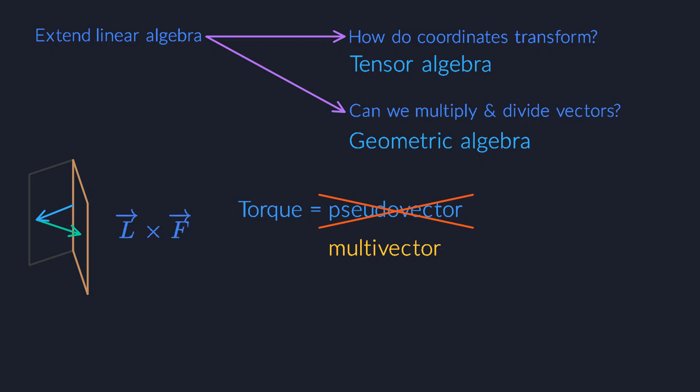Why does the cross product behave in such a weird way? Because it's related to a multivector. Why does a torque or a magnetic field flip from up to down when I look at it in a mirror? Because it's actually a multivector. Along the way we will discover that every 2D plane in our higher dimensional spaces contains a copy of the complex numbers.